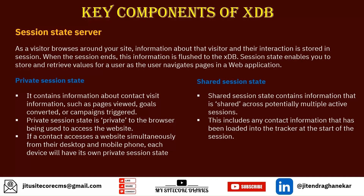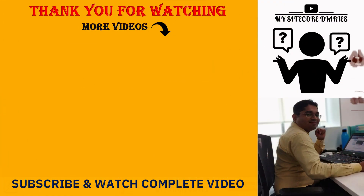All the common data shared across sessions is stored in the shared session state. It includes data like contact information — we will later see what is a known contact and an anonymous contact. Whatever contact information there is, it is first loaded and then shared across multiple active sessions, and that is also stored into the shared session state. The session state server holds the data in the session, and once flushed it goes to the xDB.